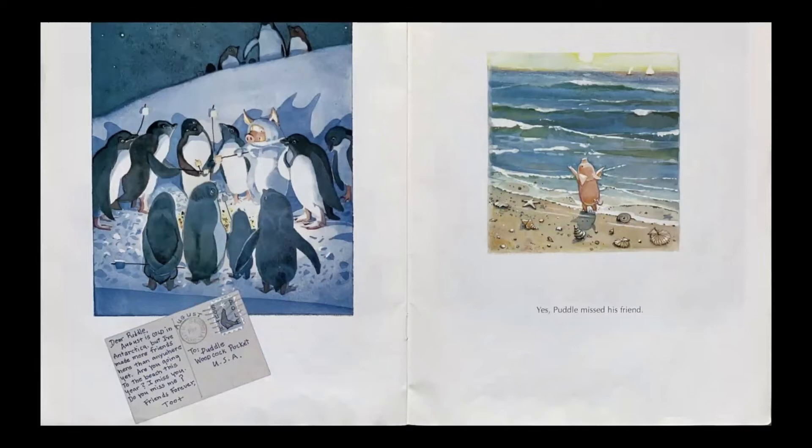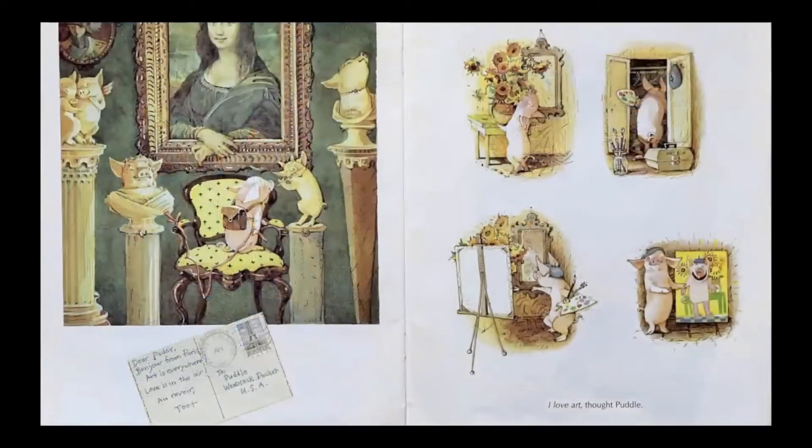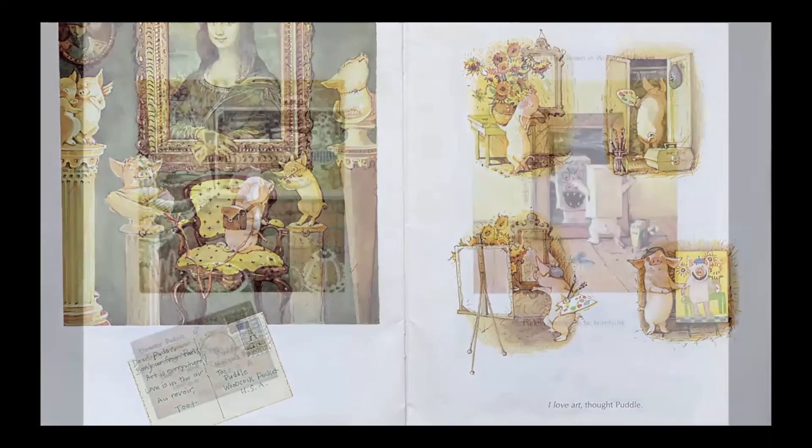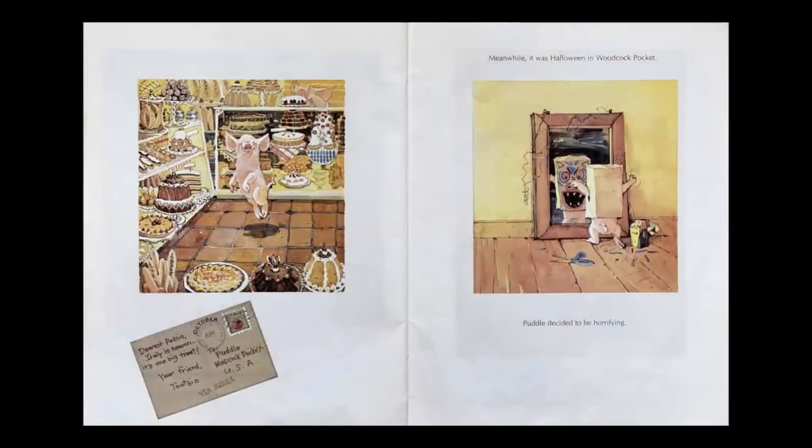Dear Pudzie, Bonjour from Paris. Art is everywhere. Love is in the air. Au revoir, Toot. I love art, thought Puddle. Dearest Pudzie, Italy is heaven. It's one big treat. Your friend Tootzie. Meanwhile, it was Halloween in Woodcock Pocket. Puddle decided to be horrifying.